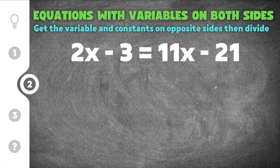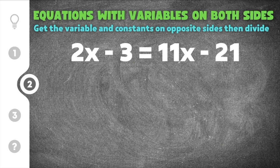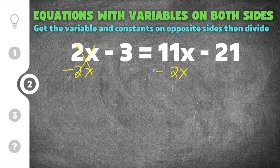Moving on to the second practice problem. This practice problem has 2x minus 3 equals 11x minus 21. Remember, the first step is to get the variables together, then we're going to get the constants together. It doesn't matter which x gets subtracted from the other — this is a positive 2x and this is a positive 11x. I could subtract 2x and get rid of the x on this side, or I could subtract 11x and get rid of the 11x on this side — it's not going to change your answer. I'm just going to subtract 2x from this side, so this 2x will cancel, and I'm also going to subtract 2x from this side to keep the equations balanced. So 11x minus 2x is 9x.